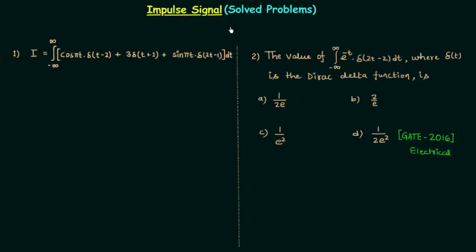In the last lecture we saw the solution of four problems based on properties of impulse signal. Now in this lecture we will solve two problems, and again the problems are based on properties of impulse signal. The second problem is taken from GATE 2016 electrical paper. The two problems are not very difficult — you can easily solve them in very less time if you use the properties of impulse signal.